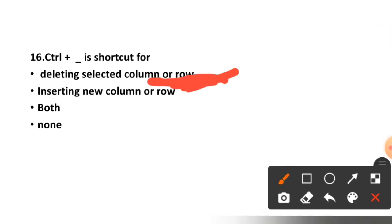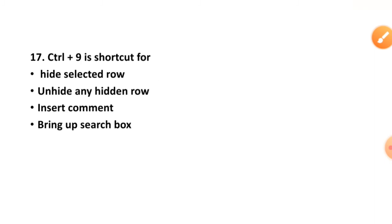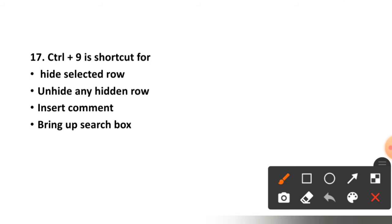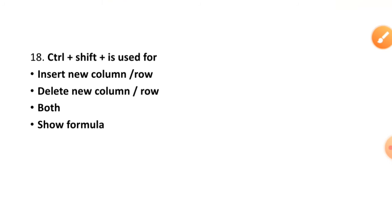Question number seventeen: Control plus 9 is a shortcut for what? Hide selected row, unhide any hidden row, insert comment, or bring up search box? The correct option is option number one, hide selected row.